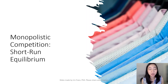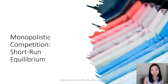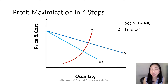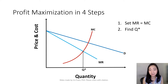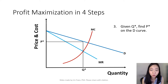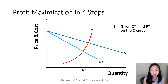We're going to talk about monopolistic competition's short-run equilibrium. I'm going to maximize my firm's profit in four simple steps. First, I'm going to set marginal revenue equal to marginal cost. At the intersection, I'm going to find the optimal quantity Q star that I'm going to produce. Once I find my optimal quantity Q star, I'm going to go back to the demand curve to see what is the consumer's willingness to pay given that quantity. And that will be the price I'm going to charge, P star.